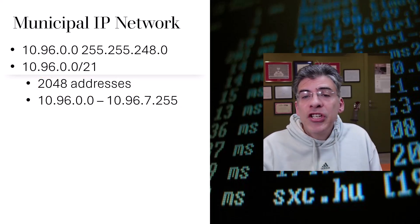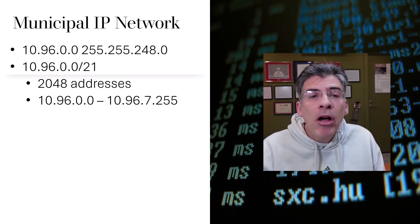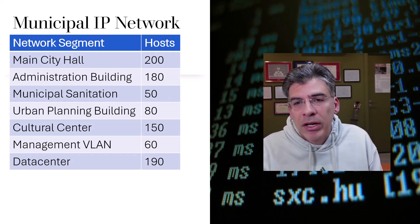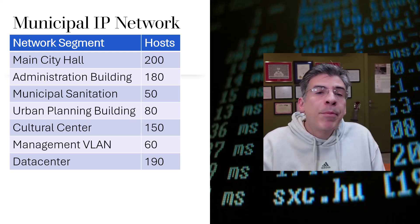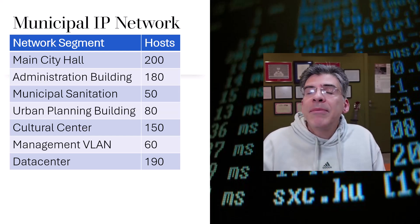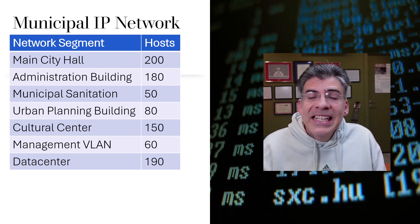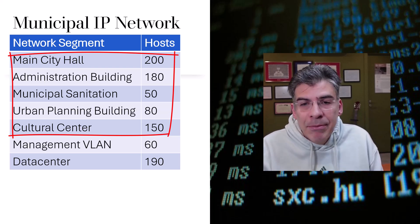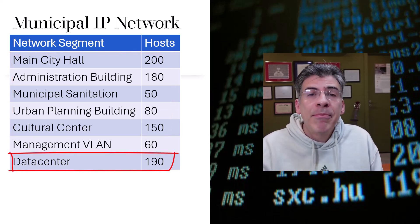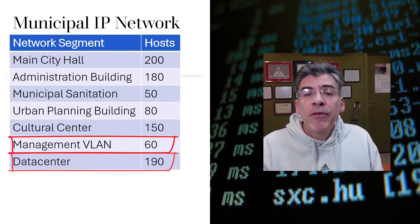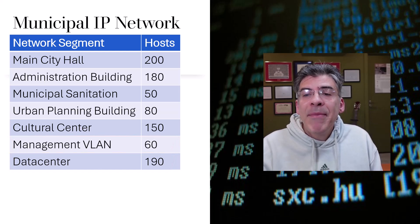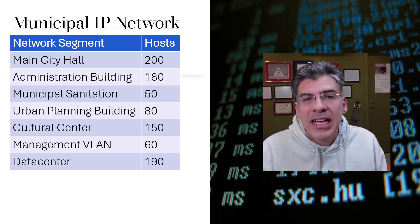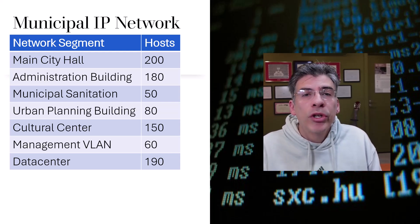Now to more appropriately and efficiently use this address space, we were called upon to subdivide this into subnets for use within the municipality network. These subnets were assigned to particular network segments. Network segmentation in an enterprise network can take various forms, but for the municipality, each building is given a segment as well as the data center and the management VLAN. Based on the number of hosts in each of these segments, the subnet mask length for each subnet must be decided.